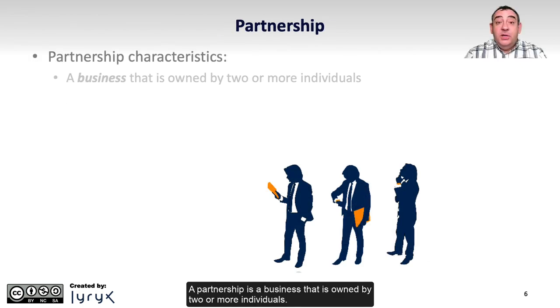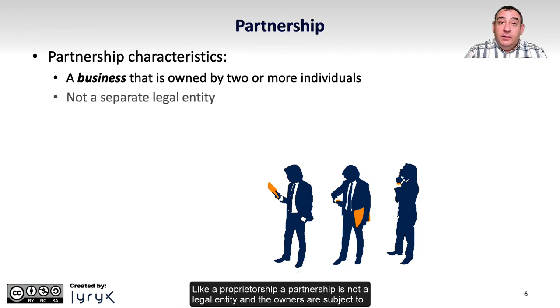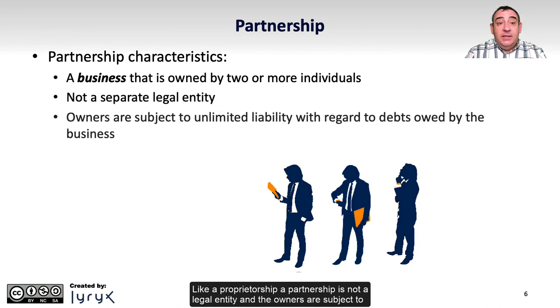A partnership is a business that is owned by two or more individuals. Like a proprietorship, a partnership is not a legal entity, and the owners are subject to unlimited liability with regards to debts owed by the business.